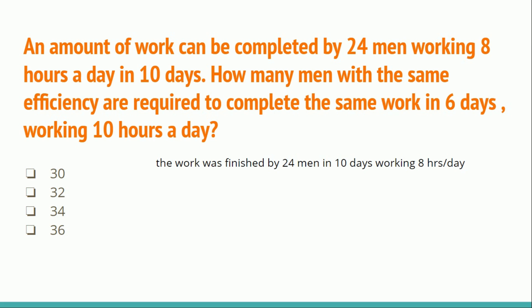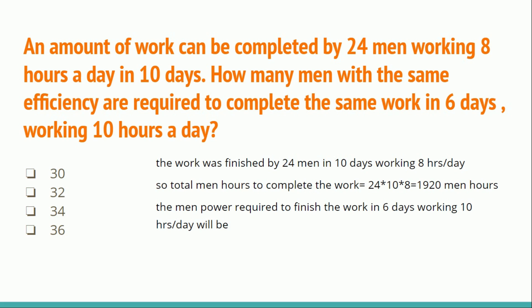The work was finished by 24 men in 10 days working 8 hours a day. So the total man-hours to complete the work = 24 × 10 × 8 = 1920 man-hours. The manpower required to finish the same work in 6 days working 10 hours a day = 1920 / (6 × 10) = 32 men. The answer is 32.